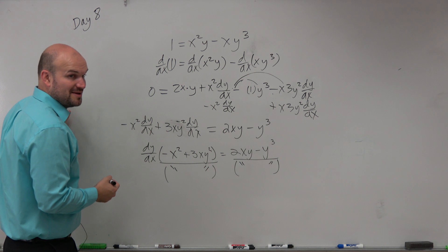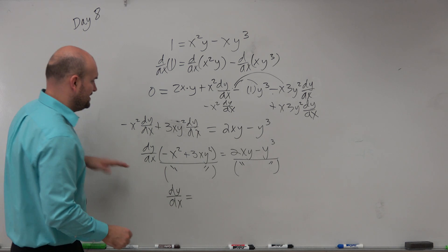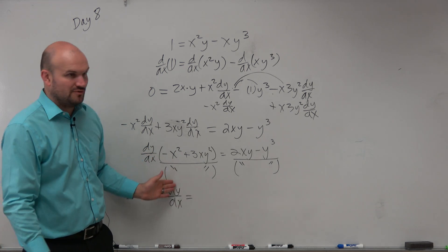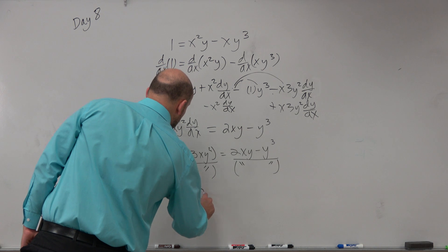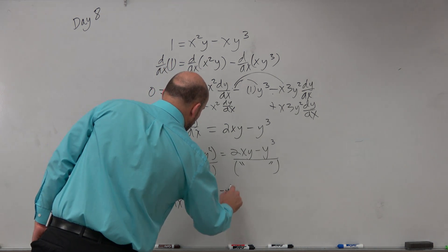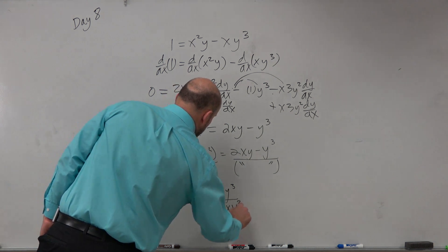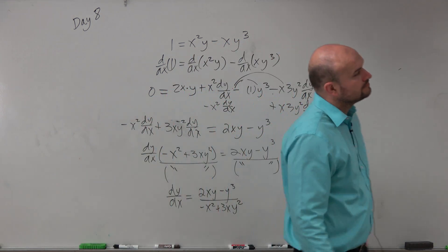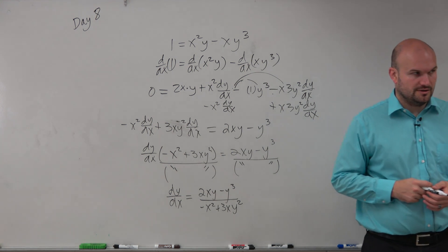This is not mathematical notation by any means. I'm just showing you guys what I do. You could easily go from this step to this step. So I divide by that term on both sides, and I would write (2xy - y³) / (-x² + 3xy²). Follow the steps.